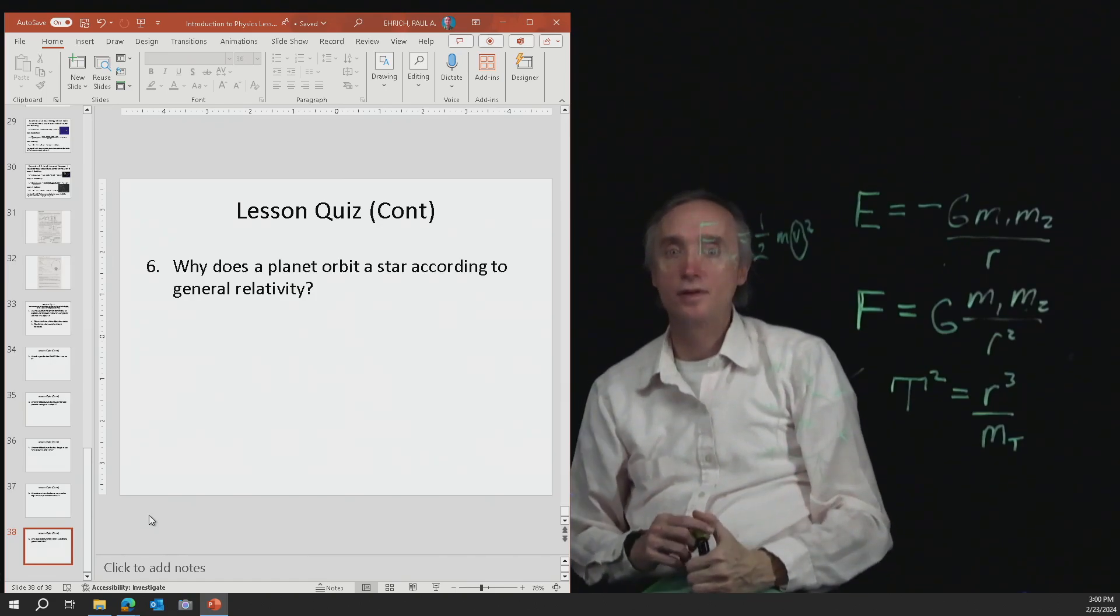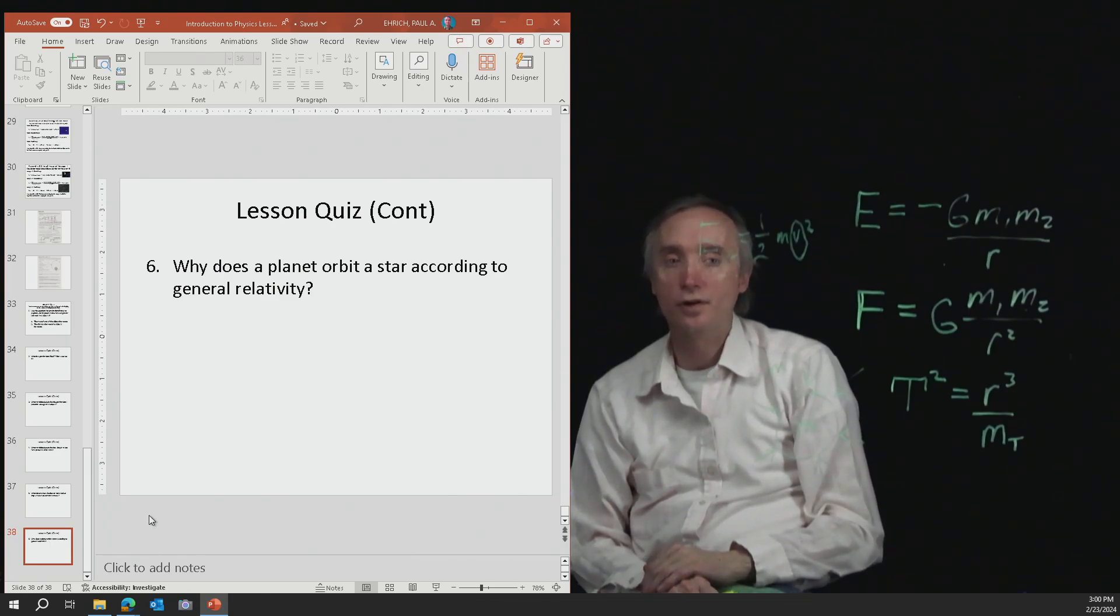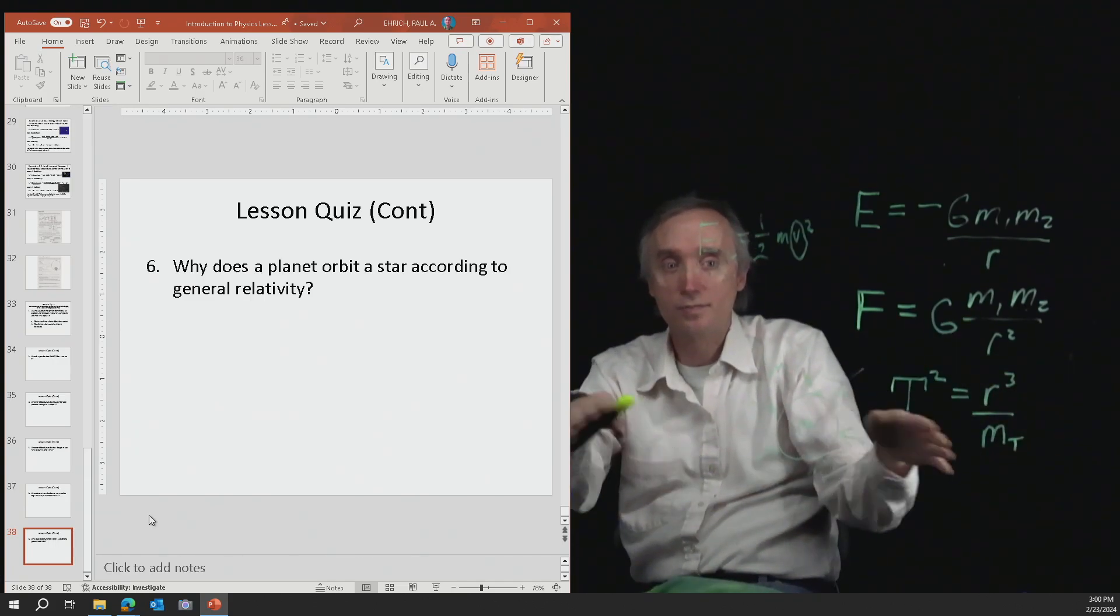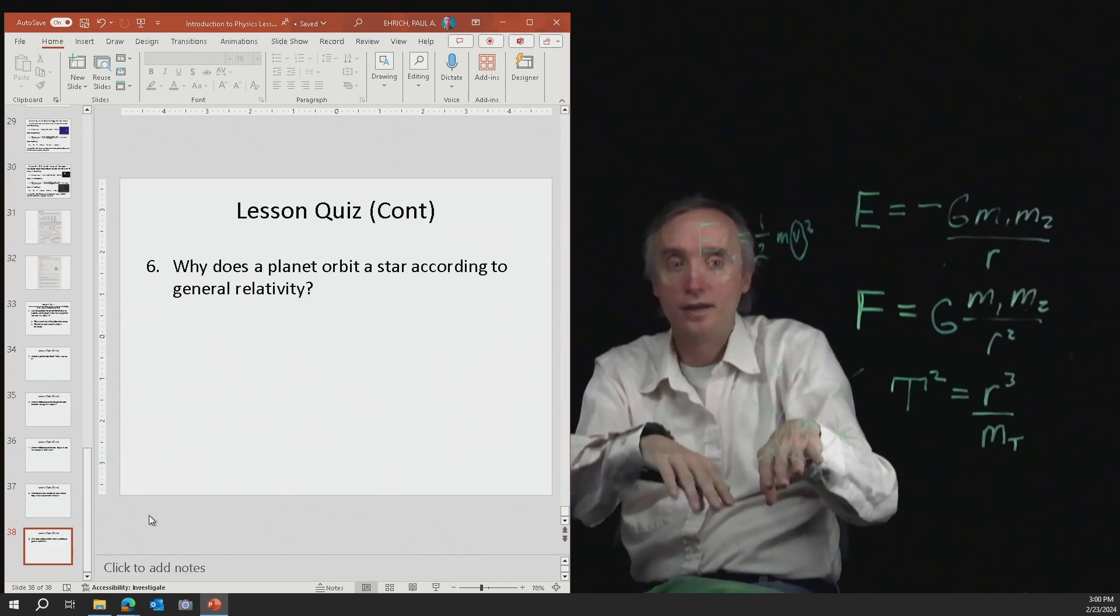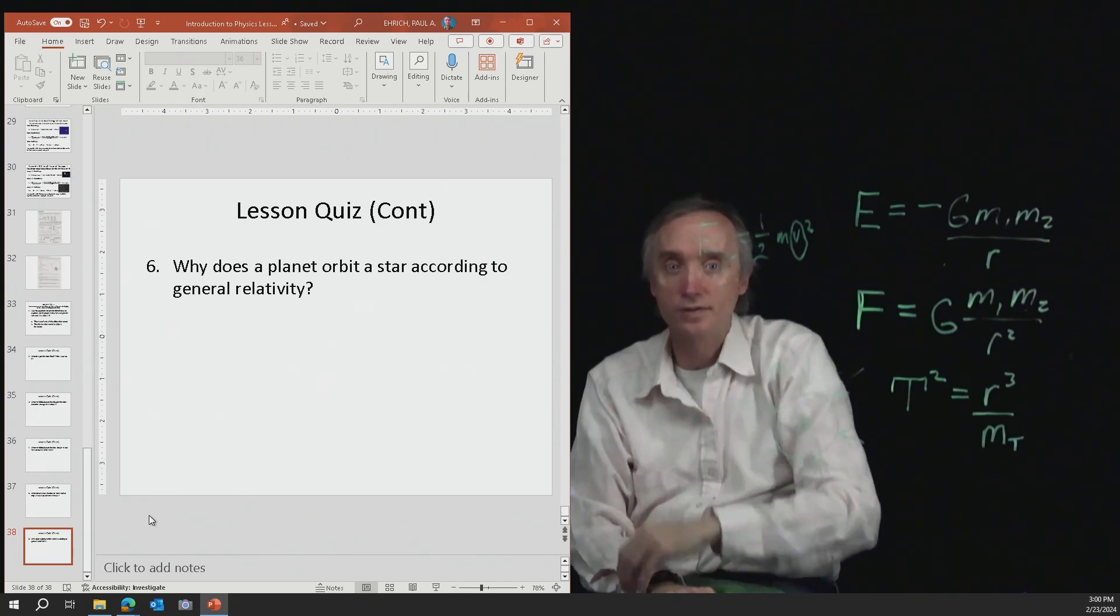And then number six, why does a planet orbit a star according to general relativity? It's because it's following the curvature of space and time caused by the mass of the star. The mass of the star is going to bend space and time. And then an object will follow that curvature of space and time.